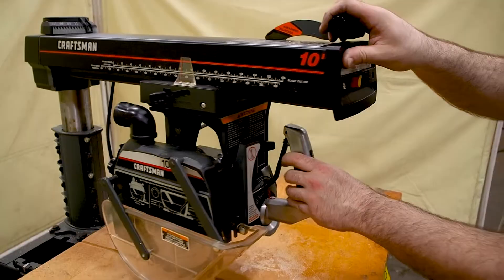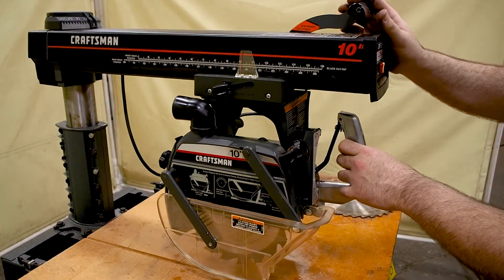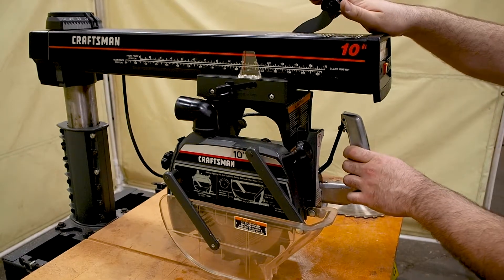Pull it forward again. You can pivot that whole arm also. It will always return back to zero. Push it back for the lock.